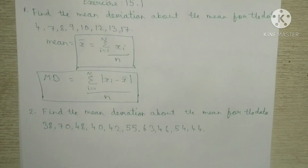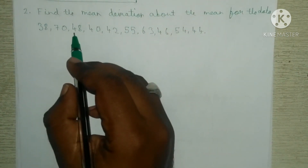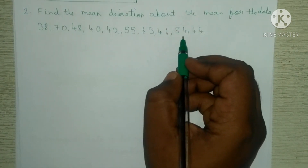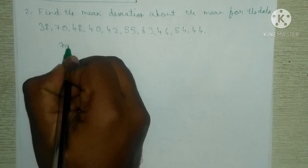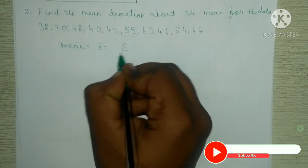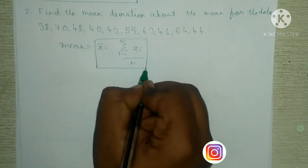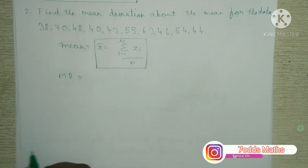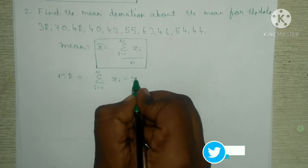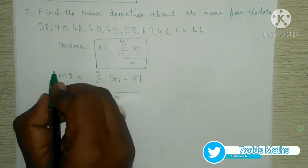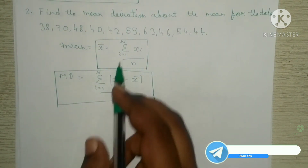Next, the second question: find the mean deviation about the mean for the data 38, 70, 48, 40, 42, 55, 63, 46, 54, and 44. For this question we need to find mean deviation. The mean formula is x-bar = summation from i = 1 to N of x_i divided by N. The mean deviation formula is summation from i = 1 to N of |x_i minus x-bar| divided by N. For the first and second questions we are using the same formulas.